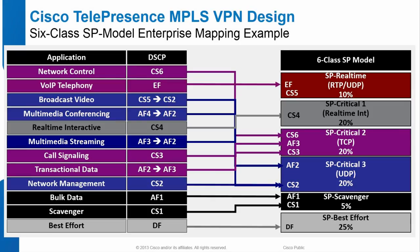A 6-class service provider model is one of the best and most flexible offered by providers. It provides EF, CS5, CS4, CS3, CS2, CS1 all the way down to best effort, making it easy to map all your values into it. Going from a 12-class model into a 6-class model means condensing similar classes — bulk data and scavenger go into a single scavenger class at 5%, management and media streaming into a single queue. The goal is to establish Critical 1, Critical 2, and Critical 3 groupings where traffic types are similar enough that they don't interact poorly with one another through the provider.